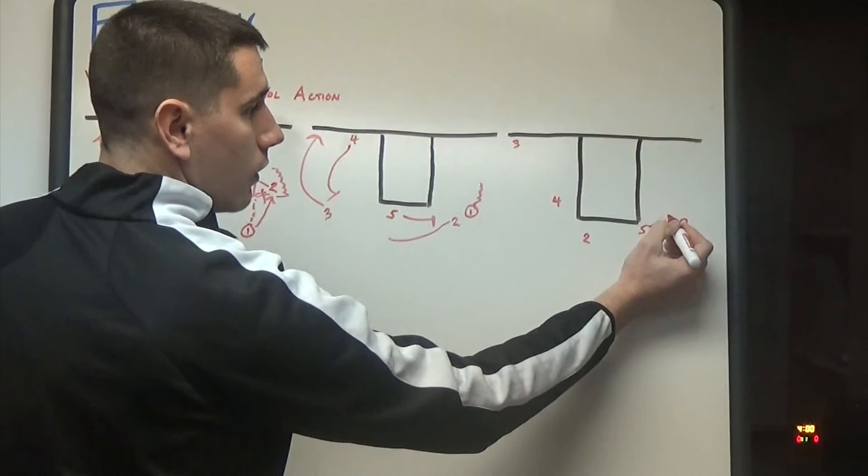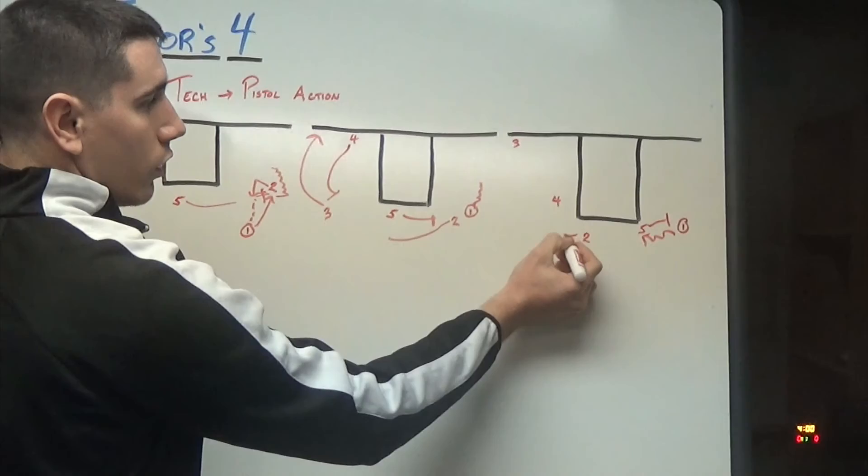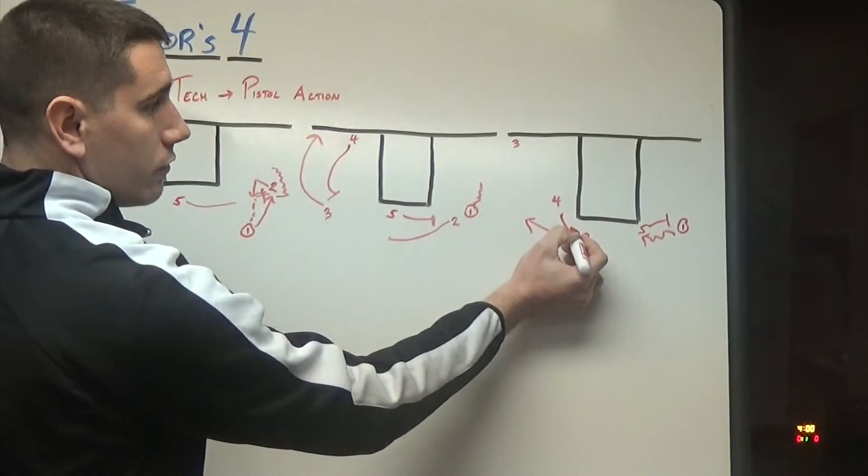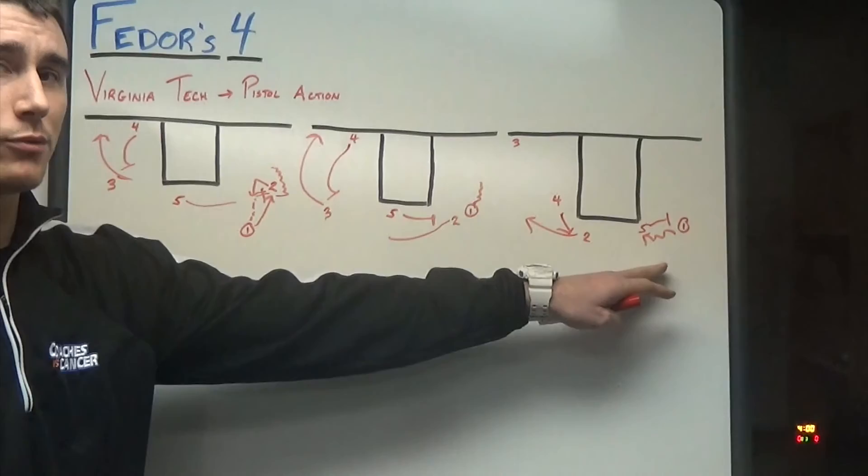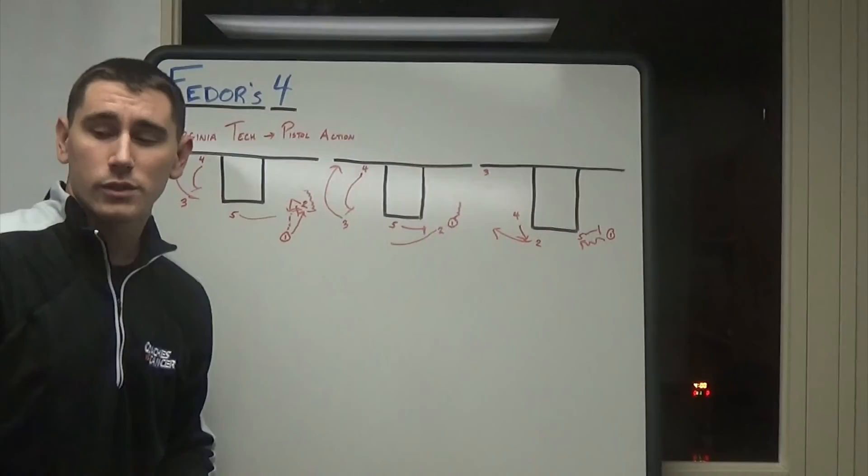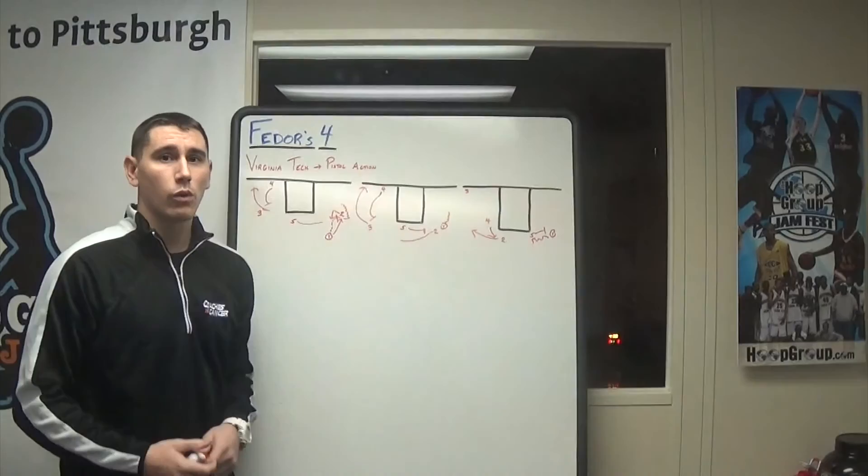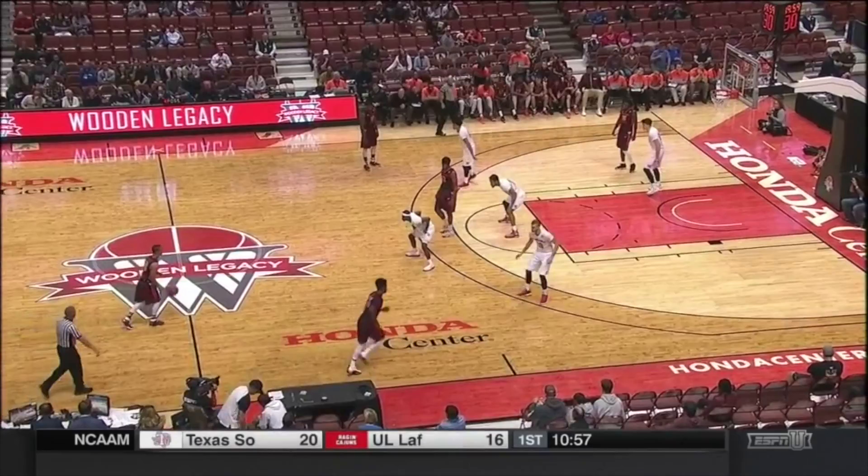And now what we have is our five man stepping right up into a ball screen. So we get our ball screen, our one coming off, three is in the corner. Two is still working his way to the other side of the floor. And what we have is our four who just set the flare is lifting to the top of the key. So there's a lot of stuff going on. It's really difficult to help on this ball screen because you're worried about the backside and the action we have going on between the flares.